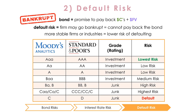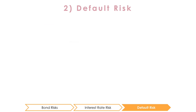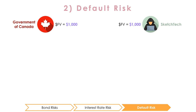As we discussed, investors expect to be compensated for risk, so the higher the risk of default, the higher the return must be on the bond to incentivize an investor to buy it. Let's consider two $1,000 face value bonds — one government treasury bill and one from a company called SketchTech. Government bonds from more economically developed countries are considered to be zero risk, since the government can always secure financing to repay a bond. For example, the government of Canada has yet to default on their bonds.